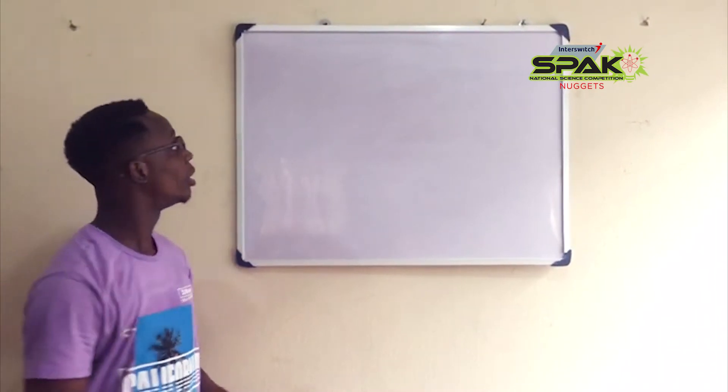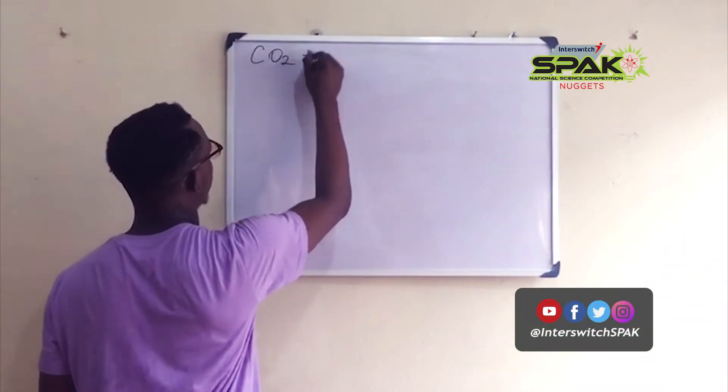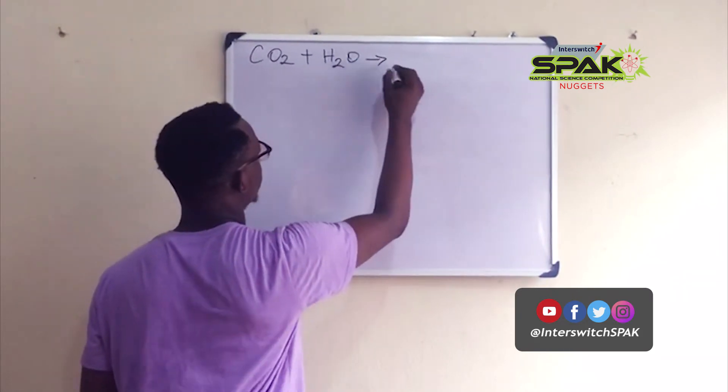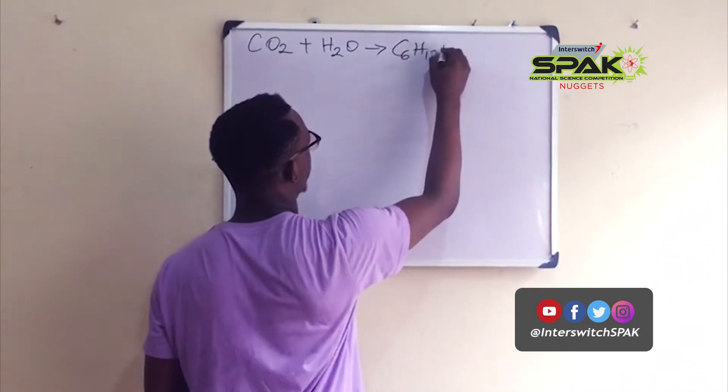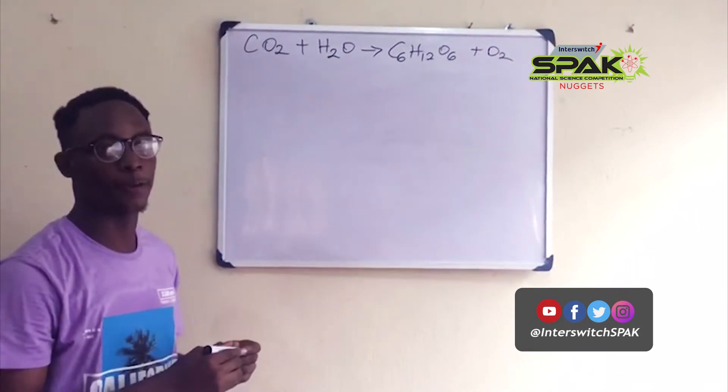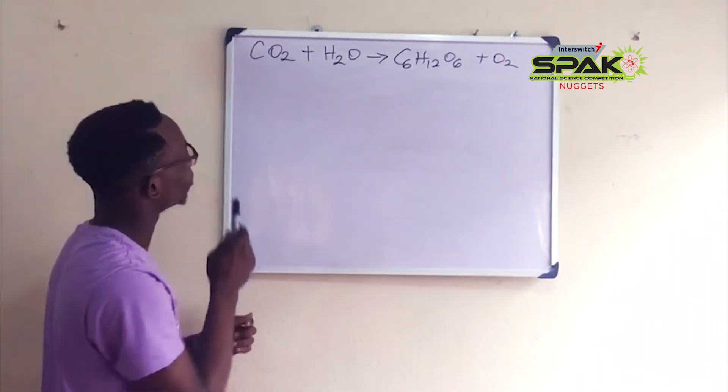For example, consider the equation CO2 plus H2O to give you C6H12O6 plus O2. Using the tip I gave, we have to balance the carbon atoms first.